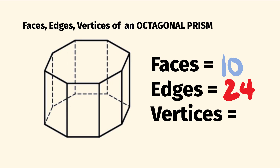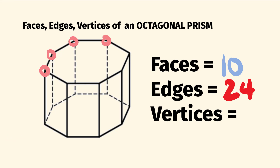Finally, to the number of vertices. These are the corners, those sharp bits there. So we can go through and count these. An octagonal prism — we have 1, 2, 3, 4, 5, 6, 7, 8 vertices on the top.